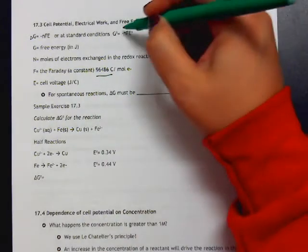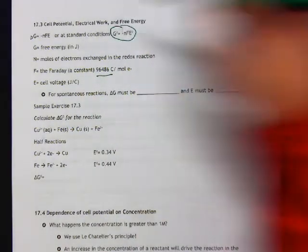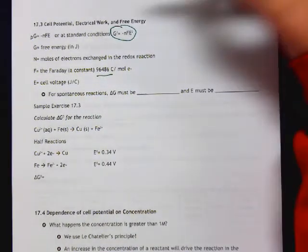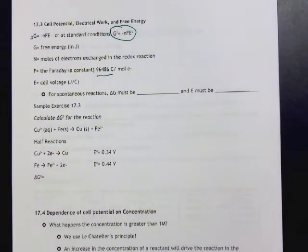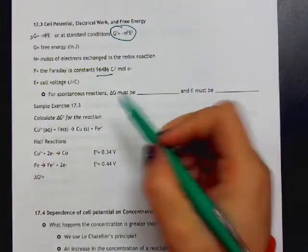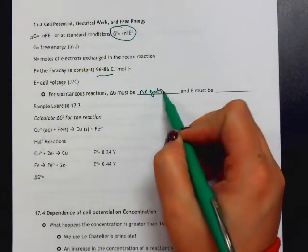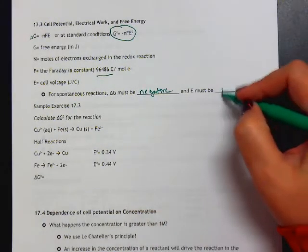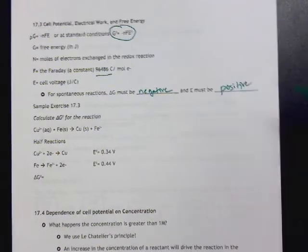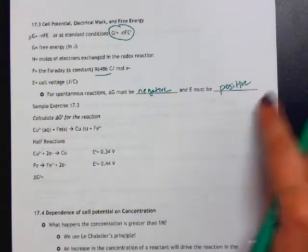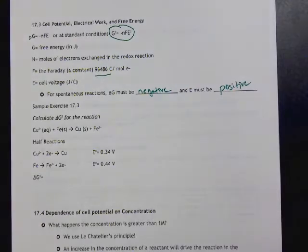To calculate our free energy, we multiply those three things together, and there's a negative sign out front. That has to do with the fact that for a reaction to be spontaneous, delta G has to be negative and E must be positive. So if those two things are true, then the reaction is spontaneous.